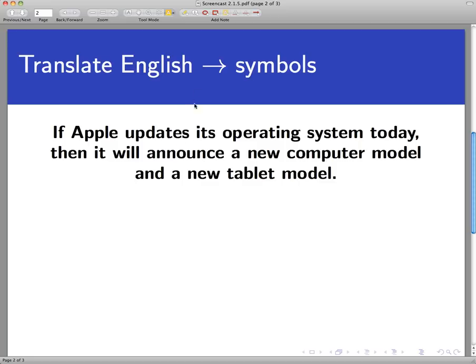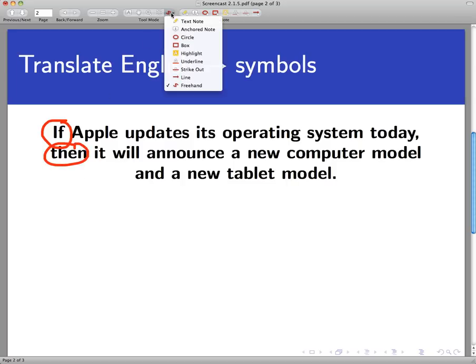So let's, starting with English, parse this and write it in symbols. We see an implication about to happen here. If, and we have the word then here, so that sets off the implication nicely. Another word you see here that's a connective is the word and.